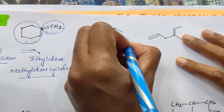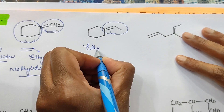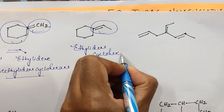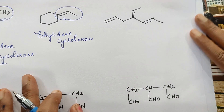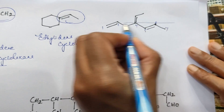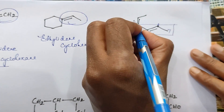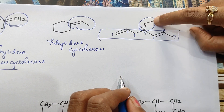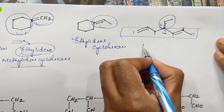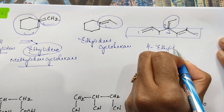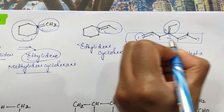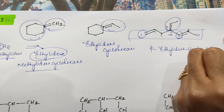Now give naming in the same way. It is ethylidene cyclohexane. Here also you can give the naming. First, you have to select the longest chain: 1, 2, 3, 4, 5, 6, 7 — a 7-carbon longest chain. This is which group? Double bond, C, CH3 is there, so it is an ethylidene group. At which position is ethylidene? 4th position. So, 4-ethylidene. Total 7 carbons, so hepta. 1st position and 5th position double bond is there, so 1,5-diene.